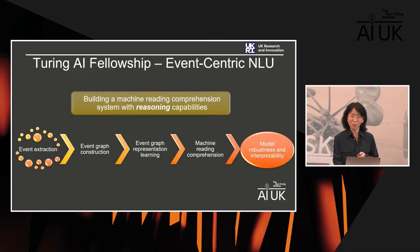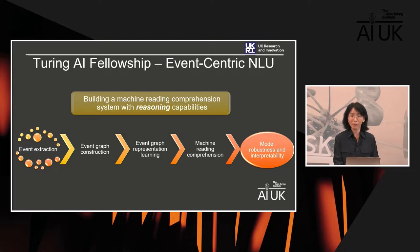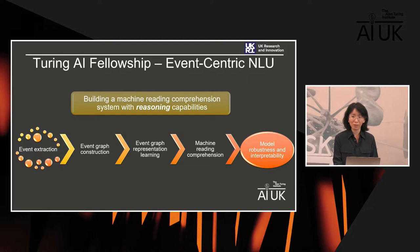In machine reading comprehension, a computer could continuously build and update a graph of eventualities as reading progresses. Question answering could in principle be based on such a dynamically updated event graph. During my fellowship I would develop a knowledge-aware and event-centric framework for language understanding, in which the event graph builds as reading progresses and event representations are learned with the incorporation of background knowledge.